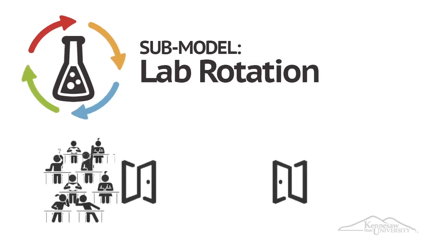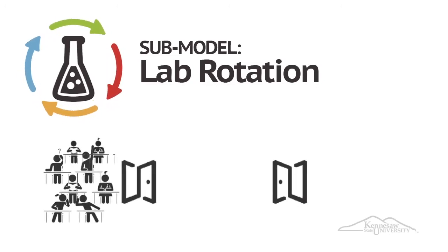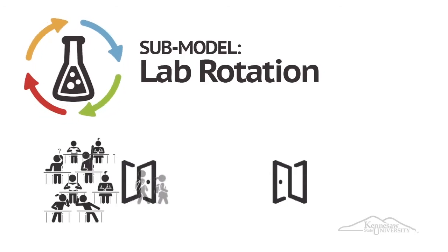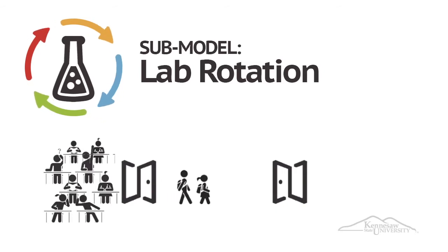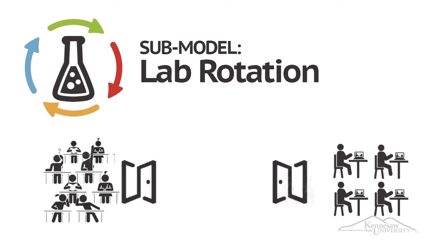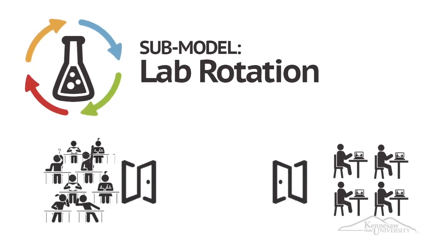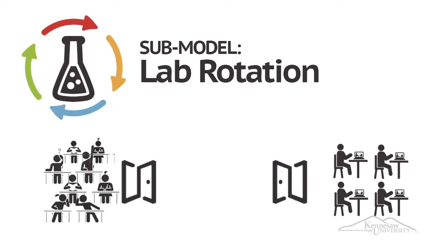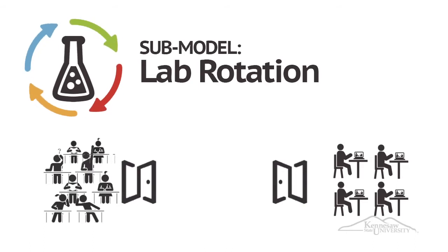The second sub-model of Rotation is the Lab Rotation. This model resembles the Station Rotation but expands to campus facilities beyond a single classroom. Students move from classrooms with traditional learning modalities to a computer lab specifically designed to support online learning. We likely see something similar in many middle and high schools as students rotate into computer labs to learn about software applications; expanding these opportunities to include online learning makes it a blended learning experience.